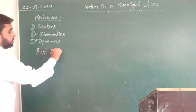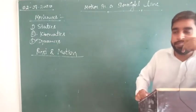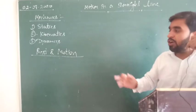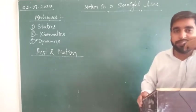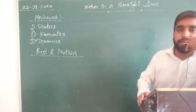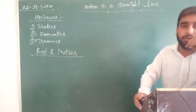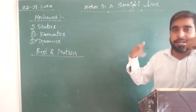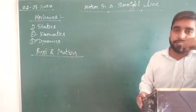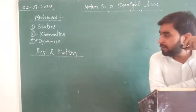Now, rest and motion — you are already familiar with these words from class 9th. If the object is not changing its position with respect to its surrounding, it is said to be at rest. For example, right now I am at rest because I am not changing my position. If the object is continuously changing its position with respect to its surrounding, it is said to be in motion. Both words are relative to each other.